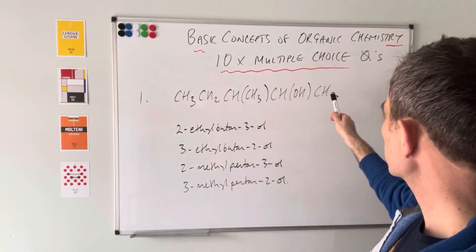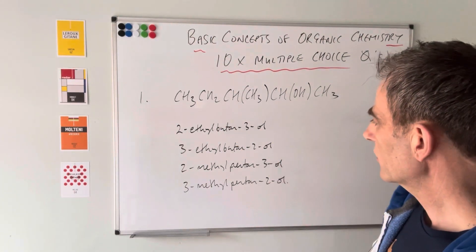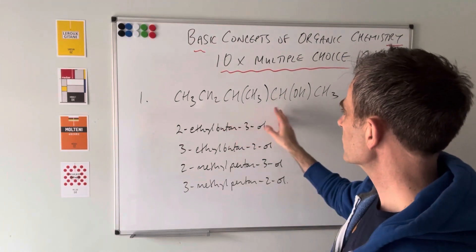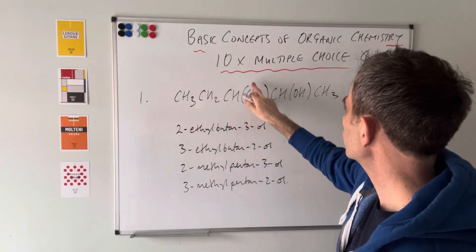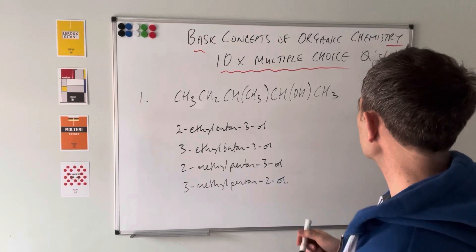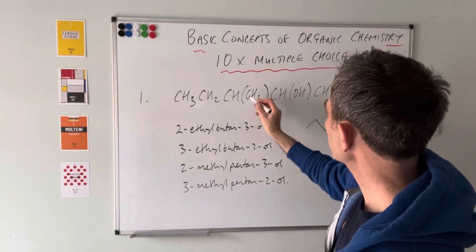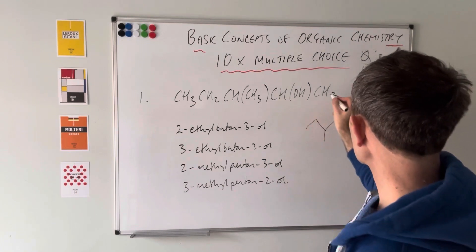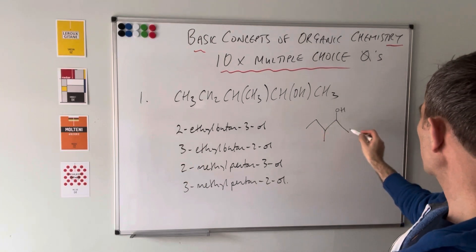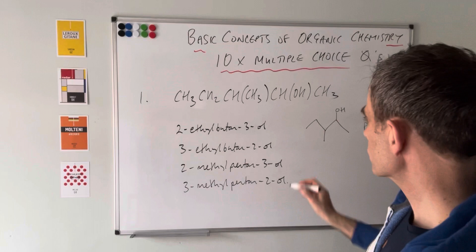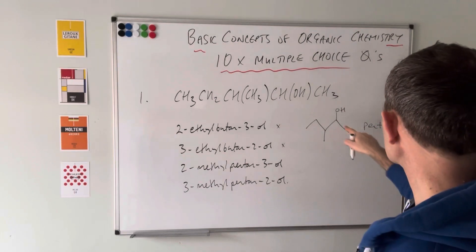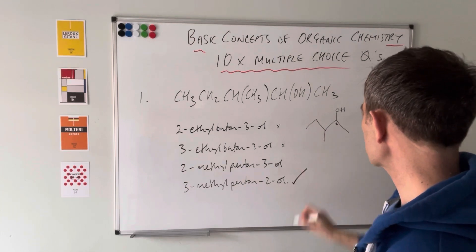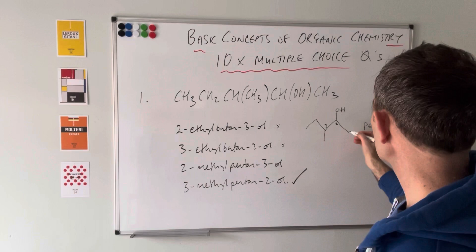Question one: we're given a structural formula and have to choose the correct name. I'd suggest drawing the skeletal formula. The longest continuous chain is five carbons, so it's 'pent-' — which rules out two of the options. The OH group is on the second carbon counting from the end closest to it, so it's pentan-2-ol. There's also a CH3 branch on carbon 3, making the full name 3-methylpentan-2-ol.